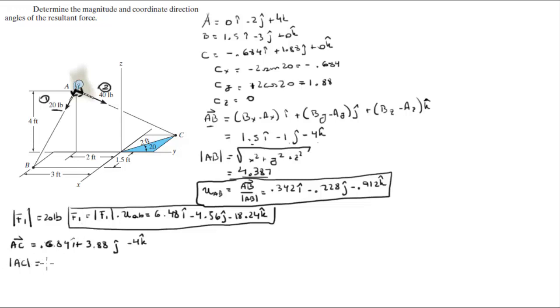The magnitude of AC comes out to be 5.614. To find the unit vector AC you get it by dividing the vector AC by the magnitude, and it comes out to be negative 0.122i plus 0.691j minus 0.713k.